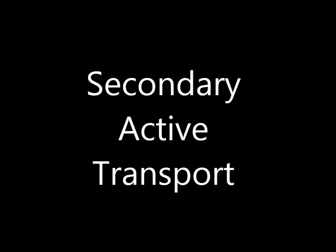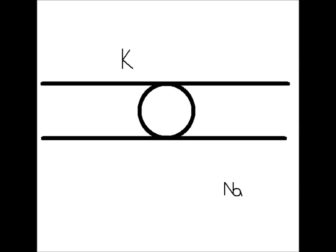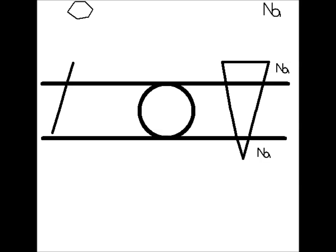Along with facilitated diffusion, we have secondary active transport. Notice here that we have a potassium and a sodium. Right now, potassium moves down and through the plasma membrane. Sodium moves out of the plasma membrane. This creates a downward concentration gradient for sodium.